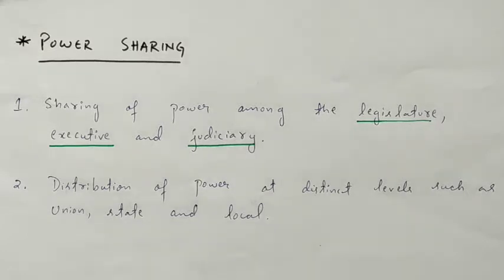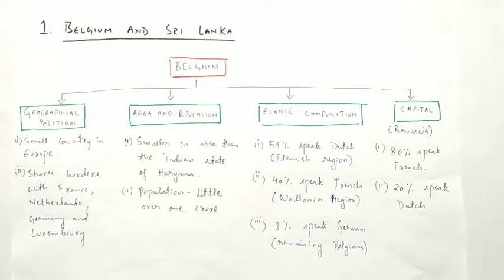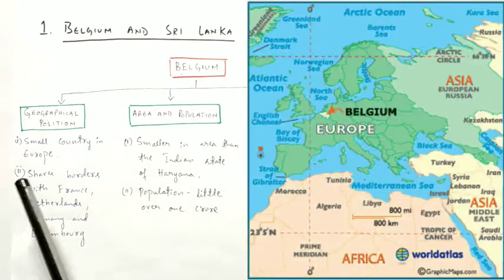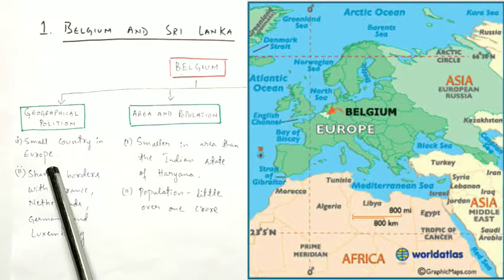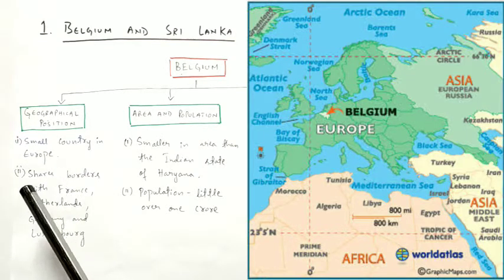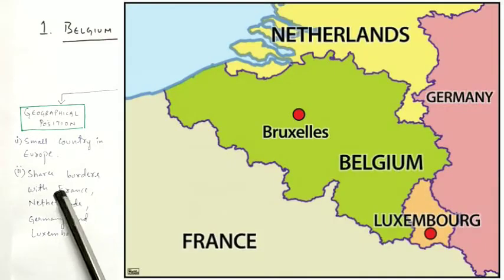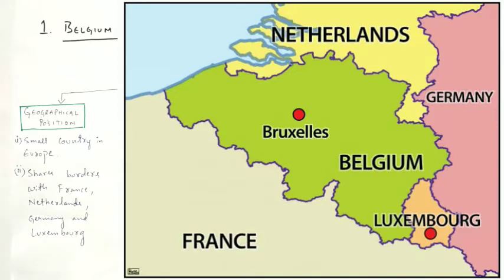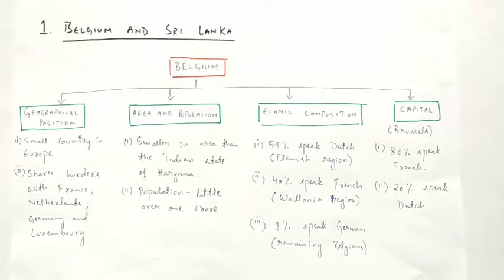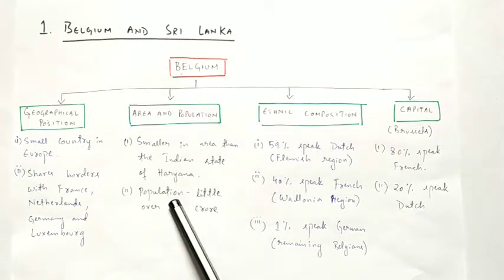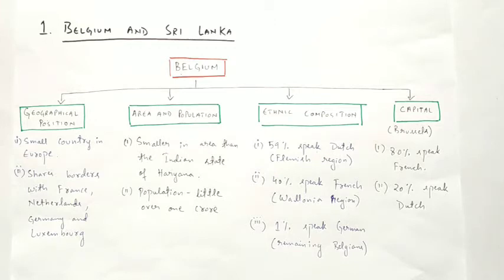Let us understand this from two examples, which is our first topic: Belgium and Sri Lanka. In this chart we will understand the structure of Belgium. Under geographical position, Belgium is a small country in Europe, located in western Europe. It shares boundaries with France, Netherlands, Germany, and Luxembourg. The area of Belgium is smaller than the Indian state of Haryana.